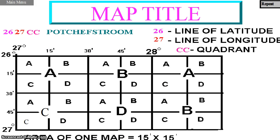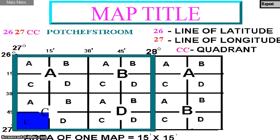A 1 in 50,000 topographical map covers an area of 15 minutes by 15 minutes on the ground. This means that an area of 1 degree of latitude by 1 degree of longitude will contain 16 1 in 50,000 topographical maps.